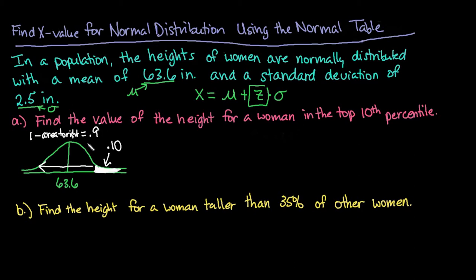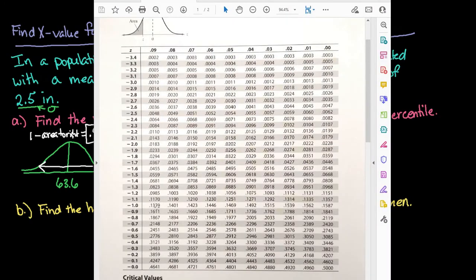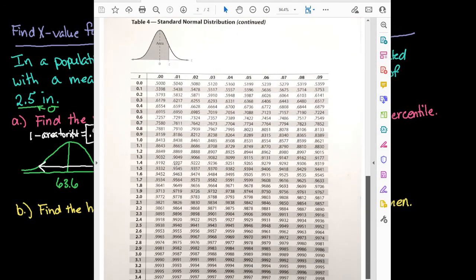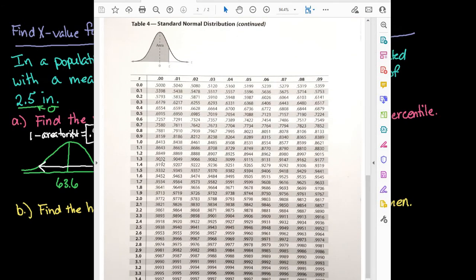So what we're going to be doing is we're going to look for the closest thing in our normal table to 0.9. So let me grab my normal table. And so what we're going to do is we're going to be looking over here at these values to find the one that is closest to 0.9. So I'm going to come to the positive side and I'm going to scroll till I find 0.90 or the closest thing. And I can see that 0.8997 and 0.9015.